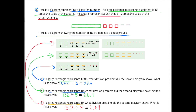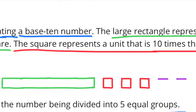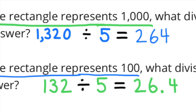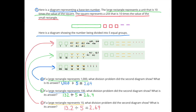Part B: If a large rectangle represents 100, what division problem did the second diagram show? What was its answer? If the large rectangle represents 100, then the square represents 10, and the small rectangle represents 1. So we have 100 plus 30 plus 2, making this diagram worth 132. The division problem would be 132 divided by 5. The answer is 10 times smaller than Part A's answer, because 132 is 10 times smaller than 1,320. 132 divided by 5 equals 26 and 4 tenths.